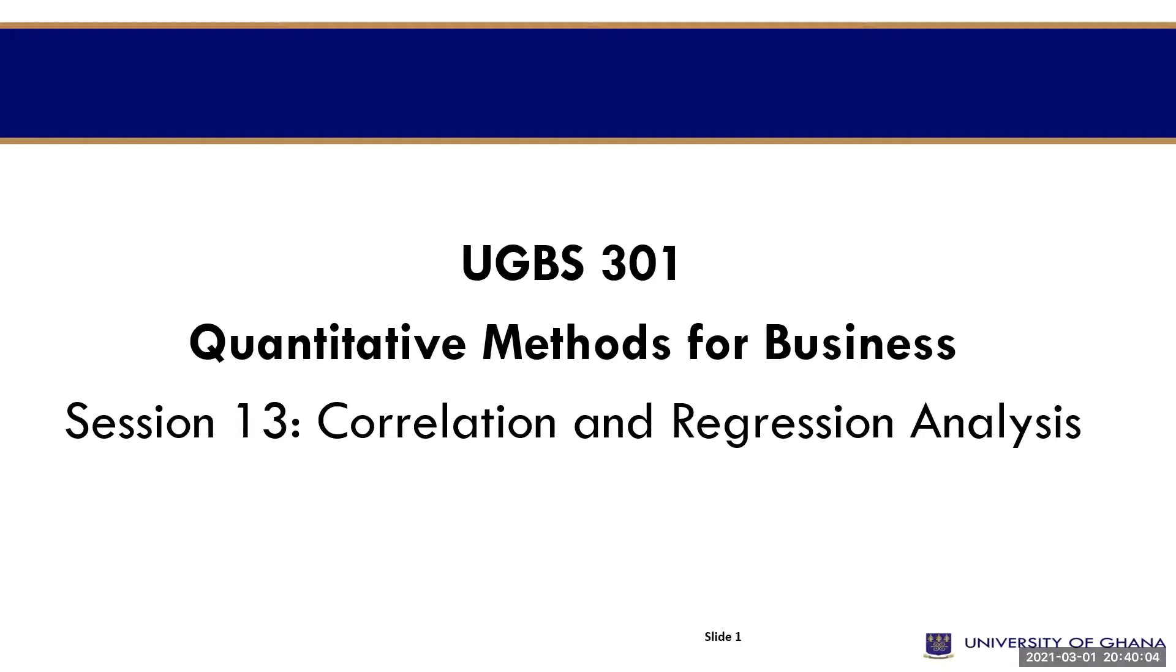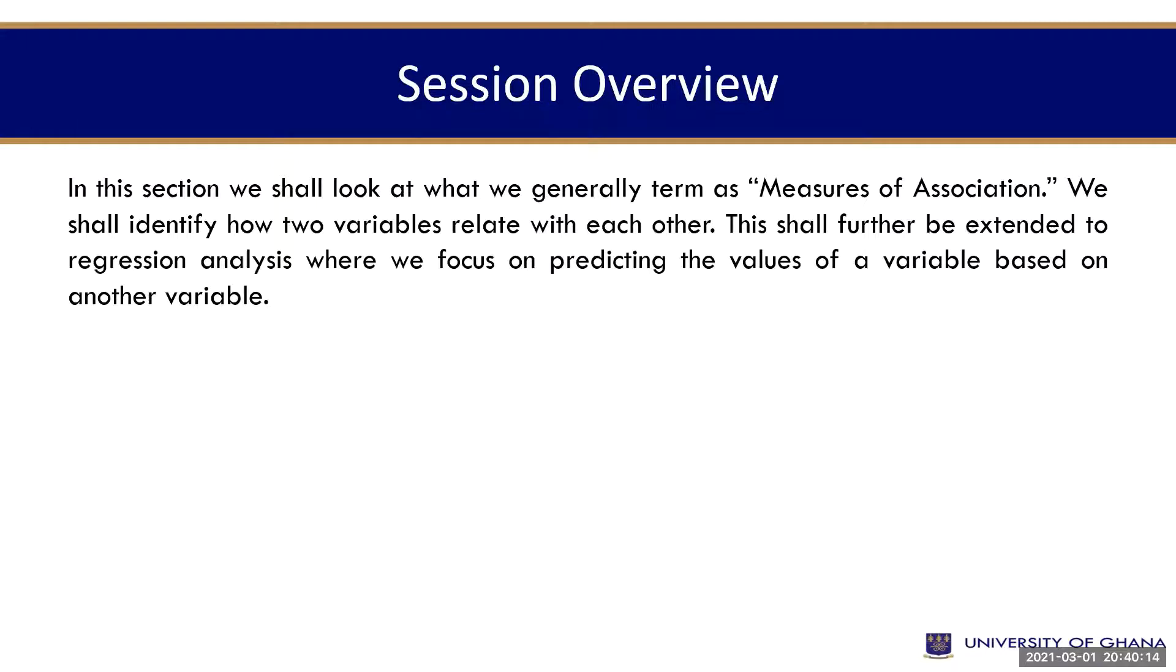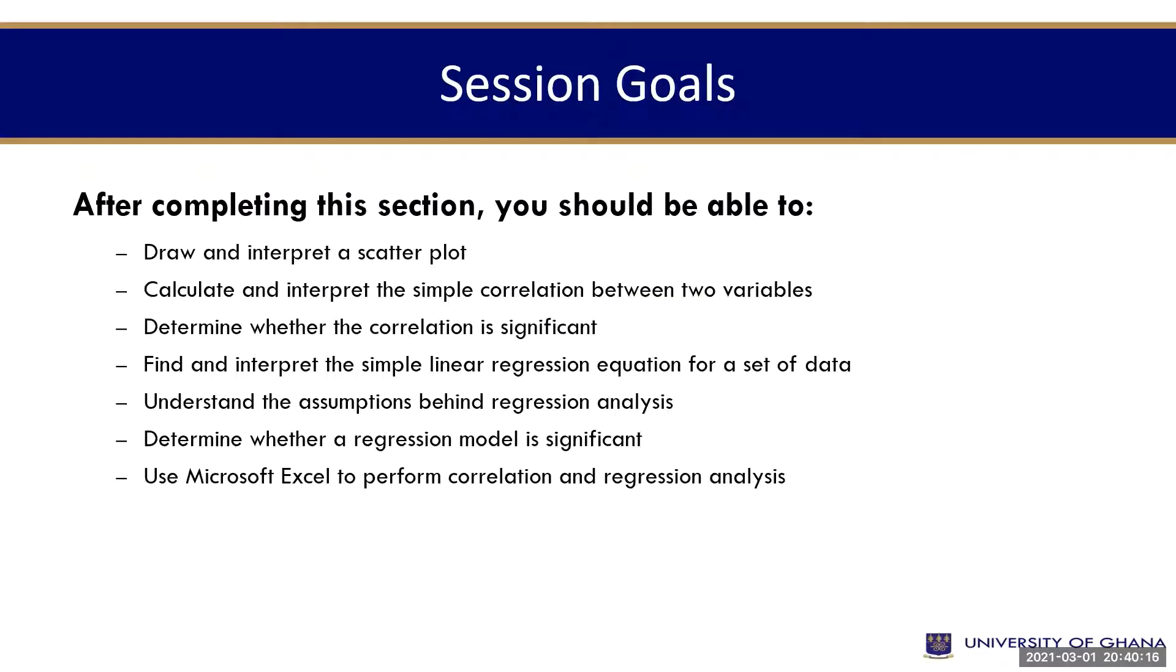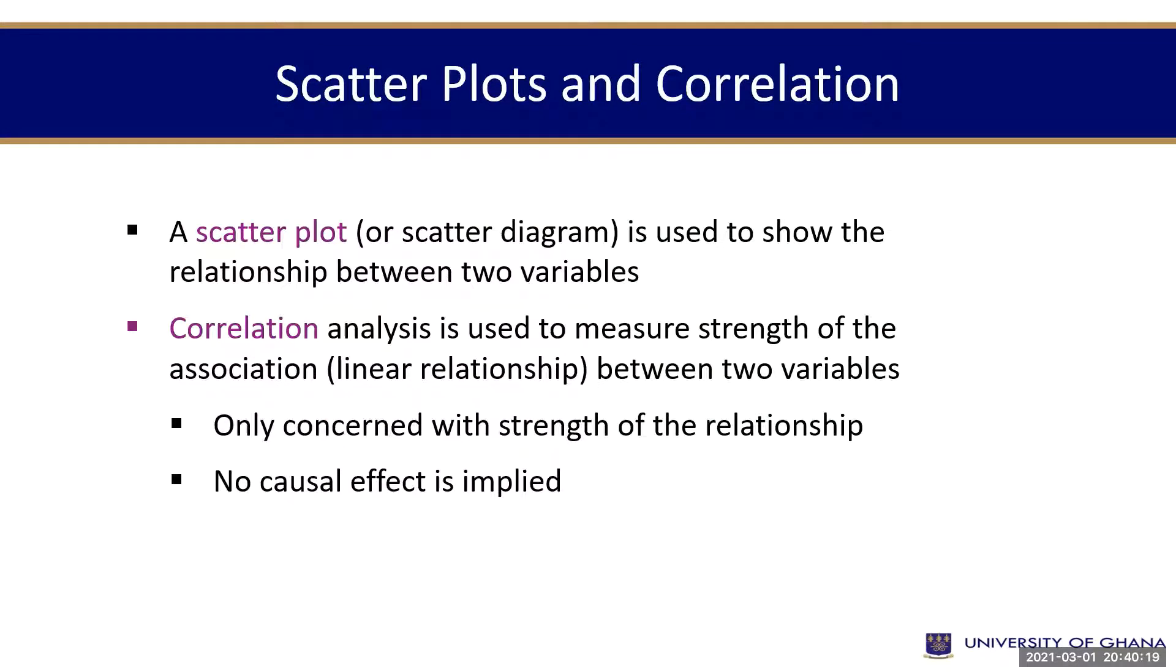If party A is going up, does it affect party B? Does party B also go up or party B goes down? Correlation establishes the relationship, whether positive or strong, weak or strong, or otherwise. Then regression is looking at what happens when one person is moving up or going down, what is the effect on the other?